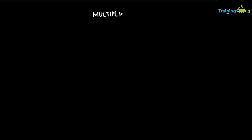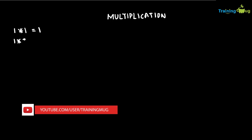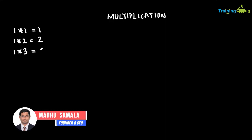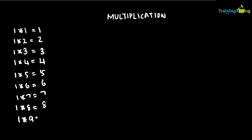Let us understand the logic behind printing the multiplication table. The multiplication table is a very simple program — we start with 1, then 1 into 1 equals 1, 1 into 2 equals 2, and we multiply 1 with numbers up to 10. The resultant is printed: 1 into 4 is 4, 1 into 5 is 5, 1 into 6 is 6, 1 into 7 is 7, 1 into 8 is 8, 1 into 9 is 9, and 1 into 10 is 10.